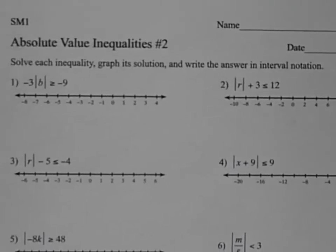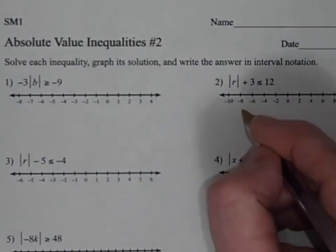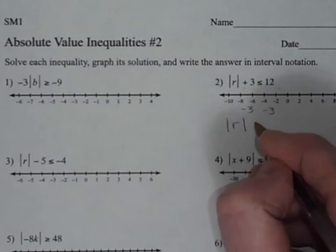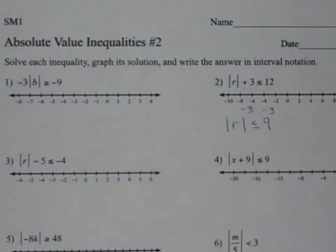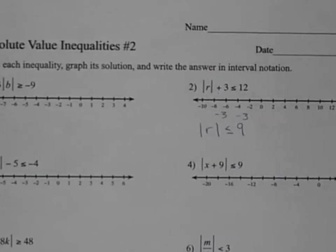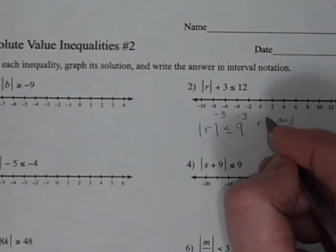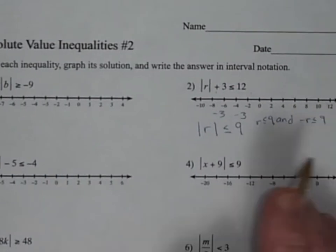Okay, numbers 1 and 2. I'll start with number 2 by subtracting 3 from both sides. 12 minus 3 is 9, so the absolute value of r is less than or equal to 9. With the less than, the less than is an and. So it's going to be r is less than or equal to 9, and where the negative of that is less than or equal to 9.